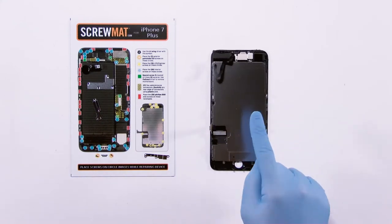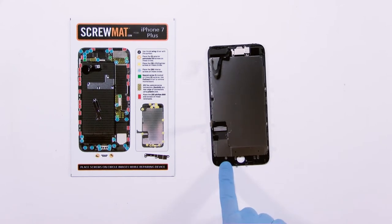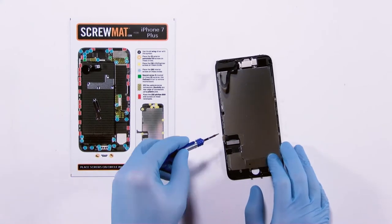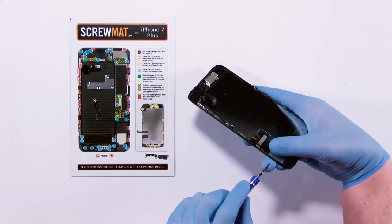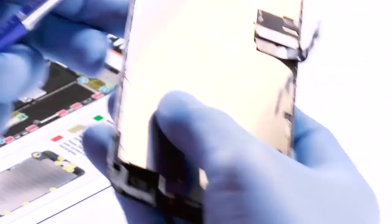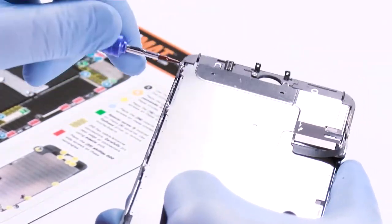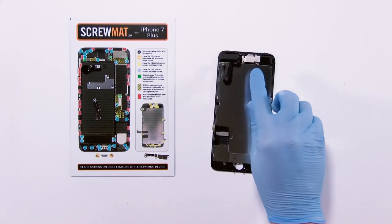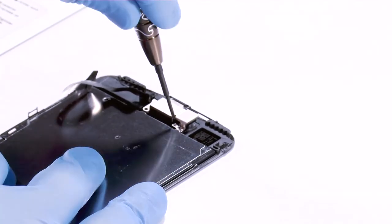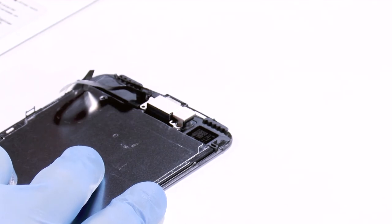So now what we want to do is we want to take off the back frame and our proximity sensor. There is one Phillips screw right down here and then tri-point along the sides. Two on the left and three on the right. So that's out. Now we're going to get the screws out the top here. This bracket holding this bracket in. These are Phillips screws.